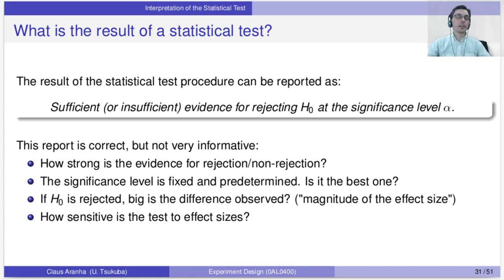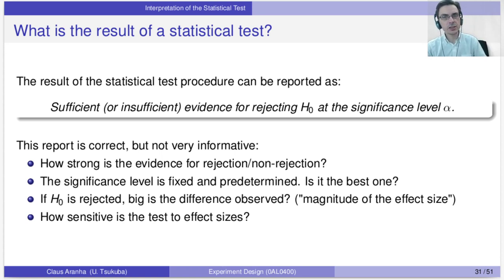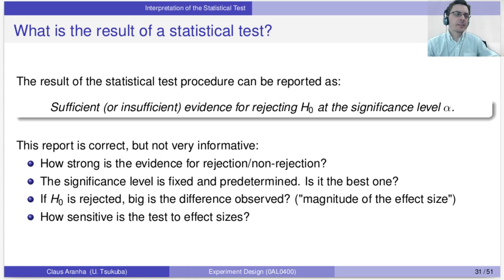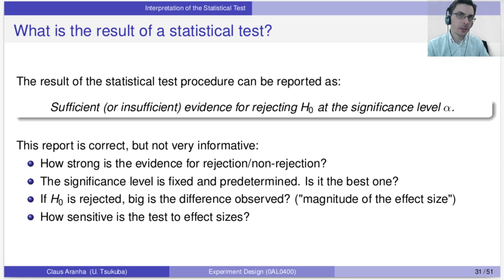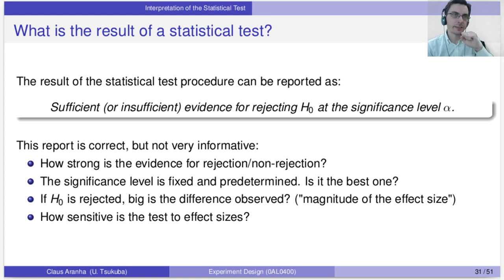This is the correct way to report a test, but there is a lot of information that is not available here. We could give more information to make the report more useful. For example, we rejected — but how strongly? Is it a strong rejection or a weak rejection? Also, the significance level is fixed at alpha — 95%, 99%, or 90%. Why did you choose 95%? Are you trying to hide something? Would your test fail at 99% confidence?